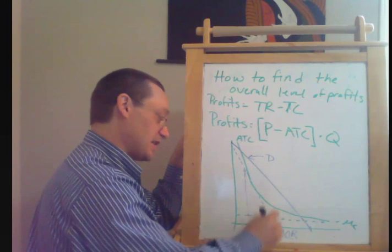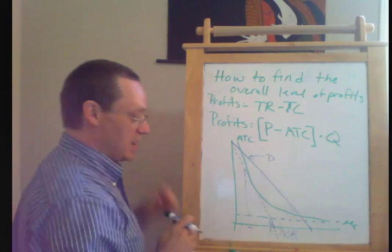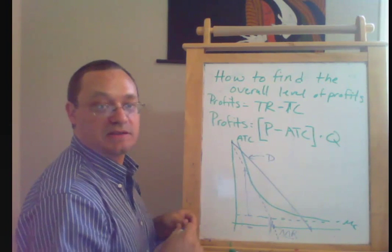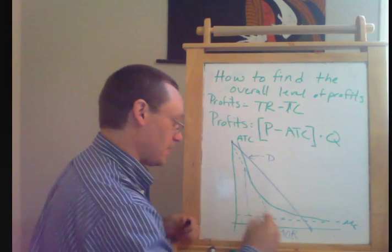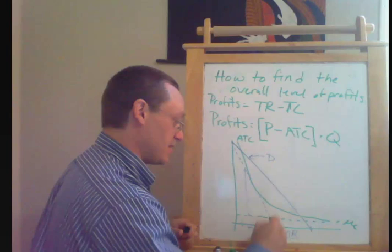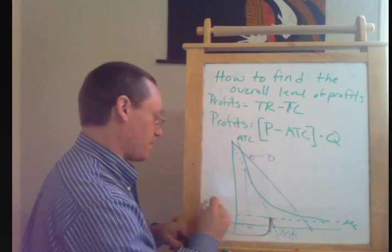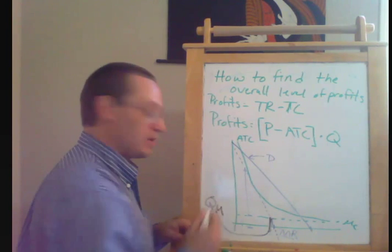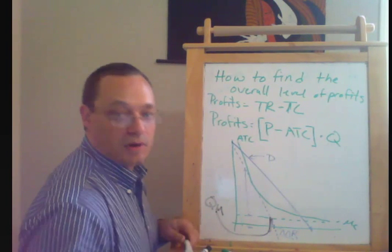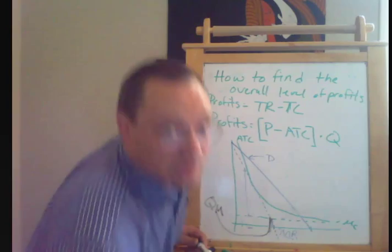So this intersection right here is our profit maximizing quantity. We'll see if black works any better. I think that's a little bit better. Okay. So that we'll call it QM for the quantity that the monopolist chooses to produce.